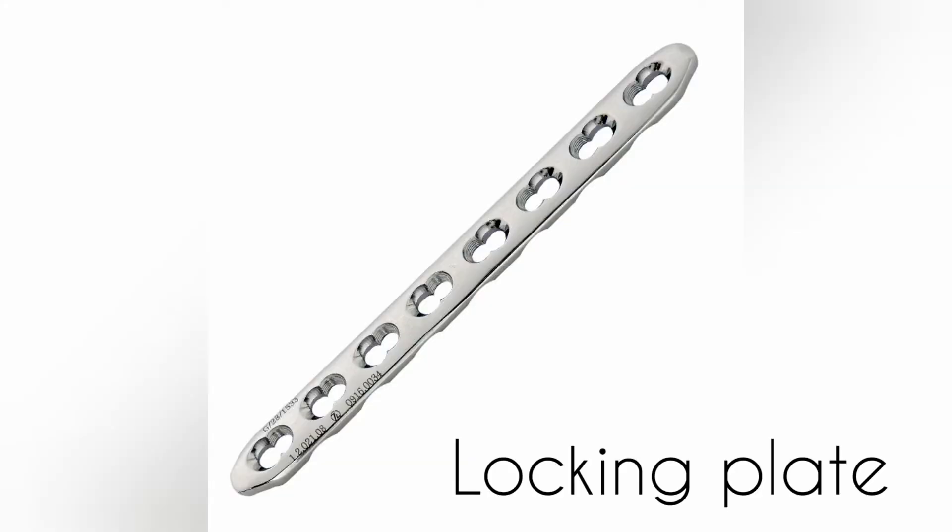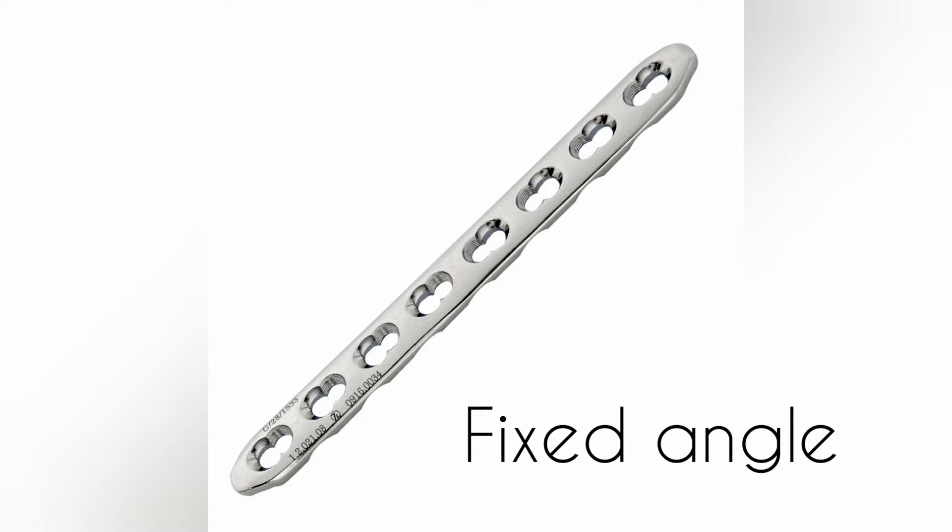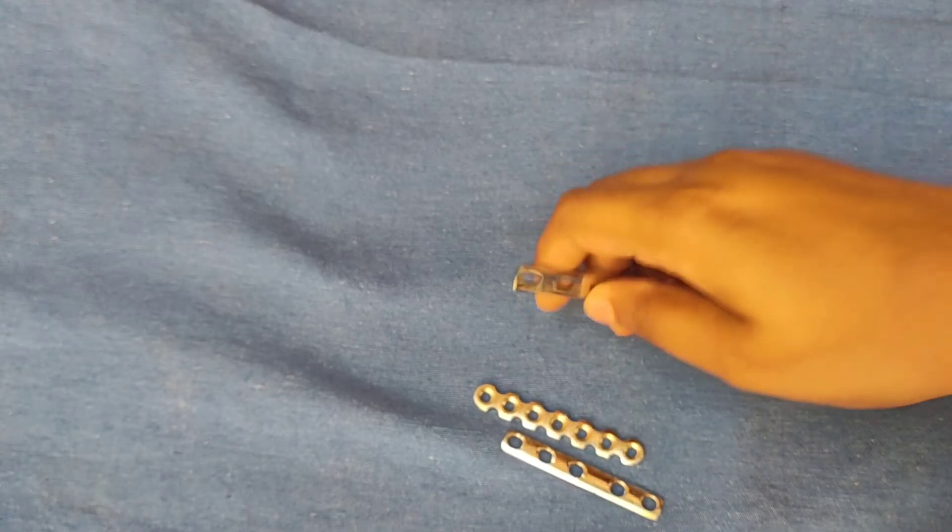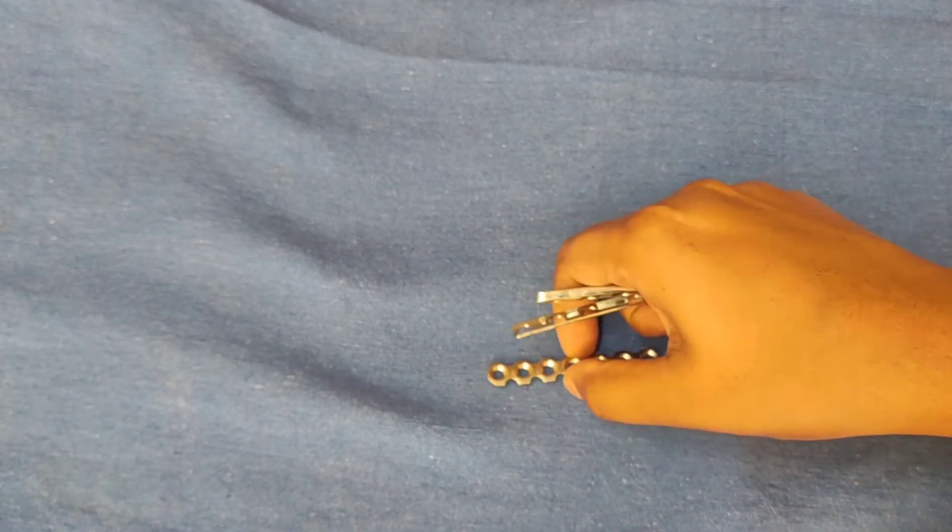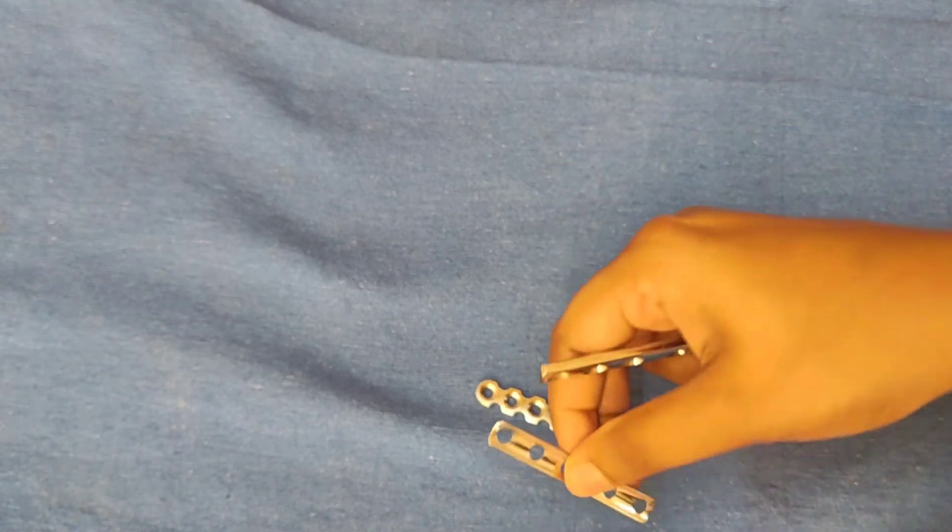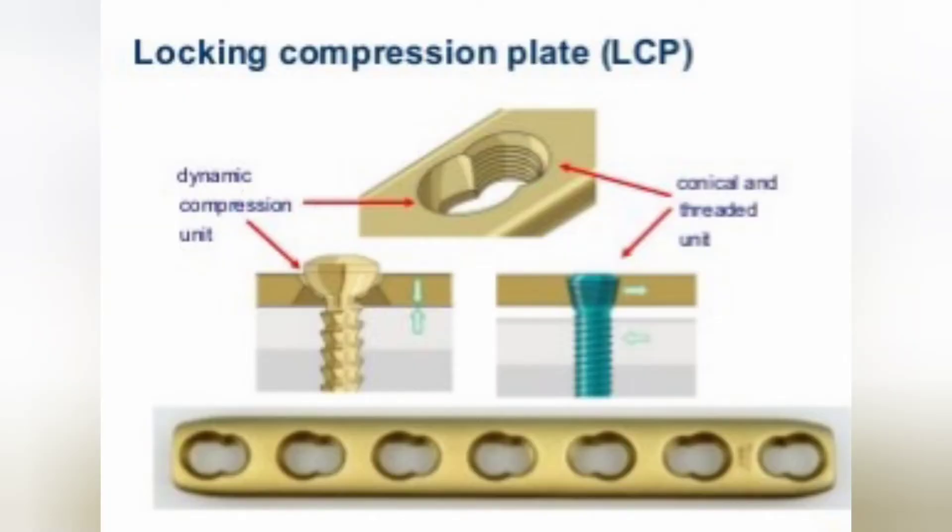Next is locking compression plate. Locking compression plate is a fixed angle construct where screw head is locked into the plate. The stability of fixation occurs at screw plate interface. There is no contact between plate and bone interface so it will not hamper periosteal vascularity.